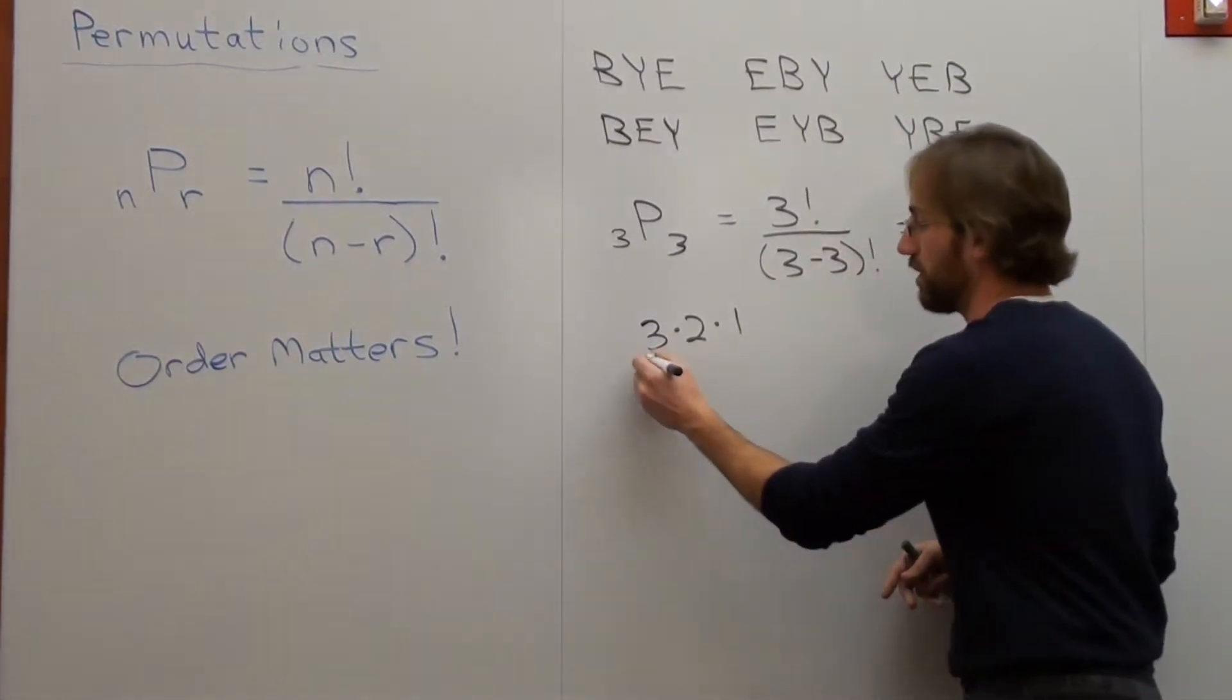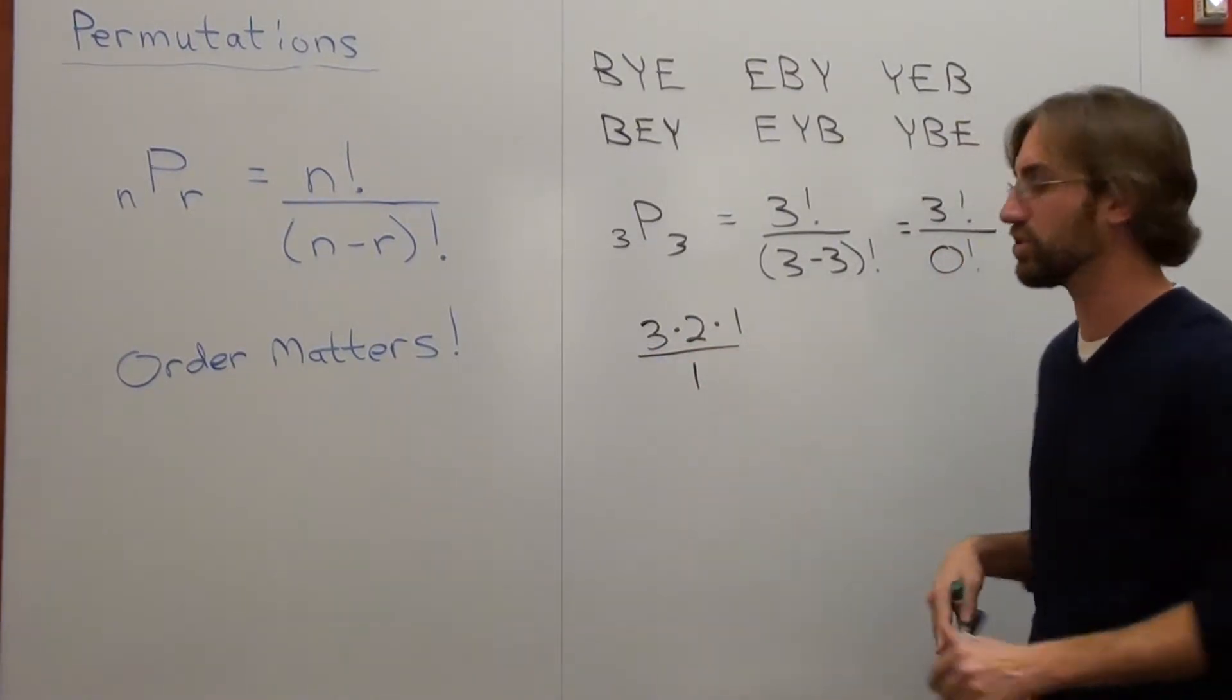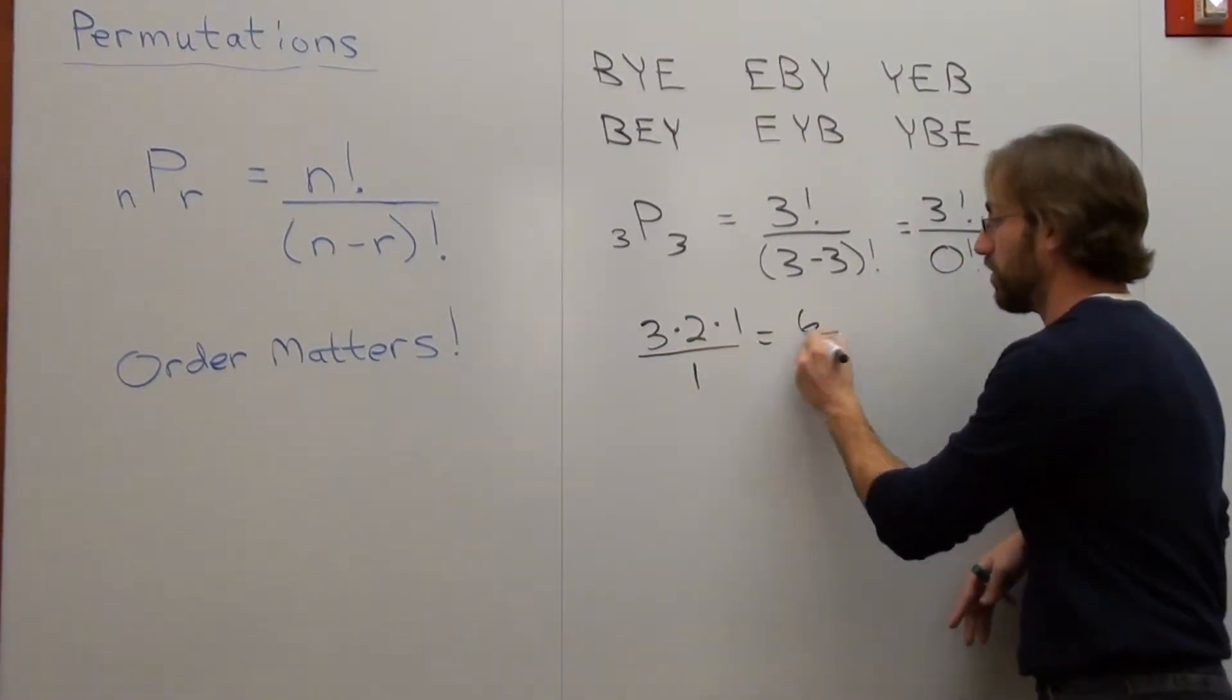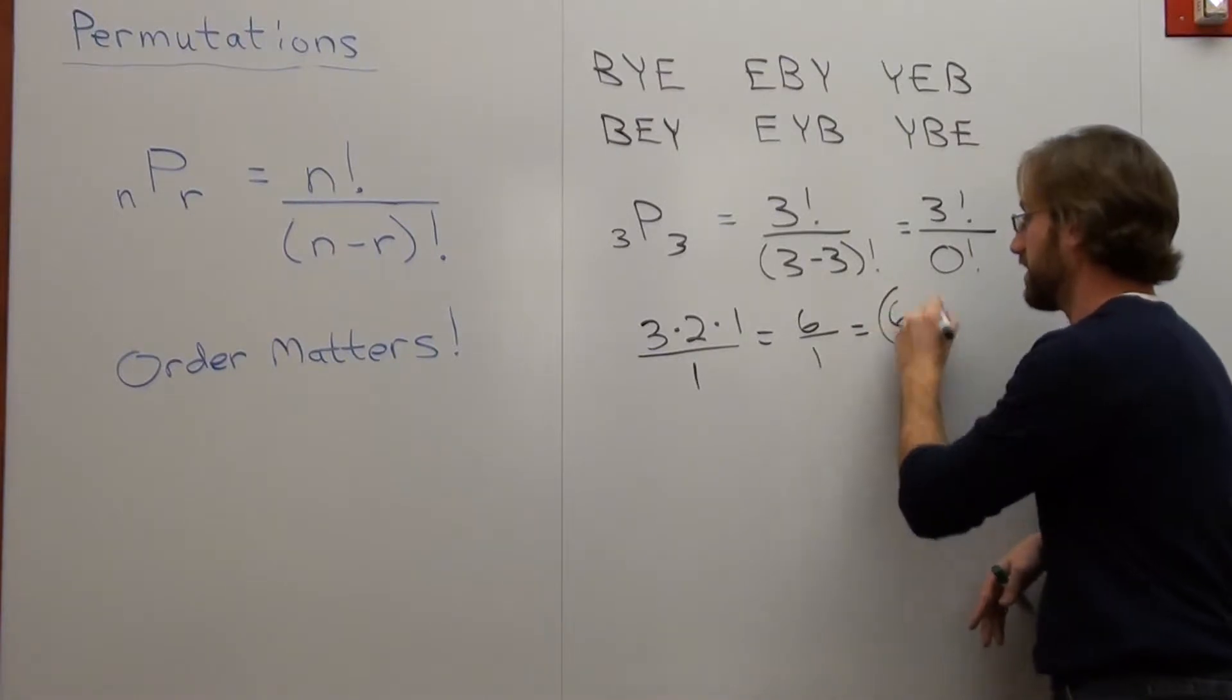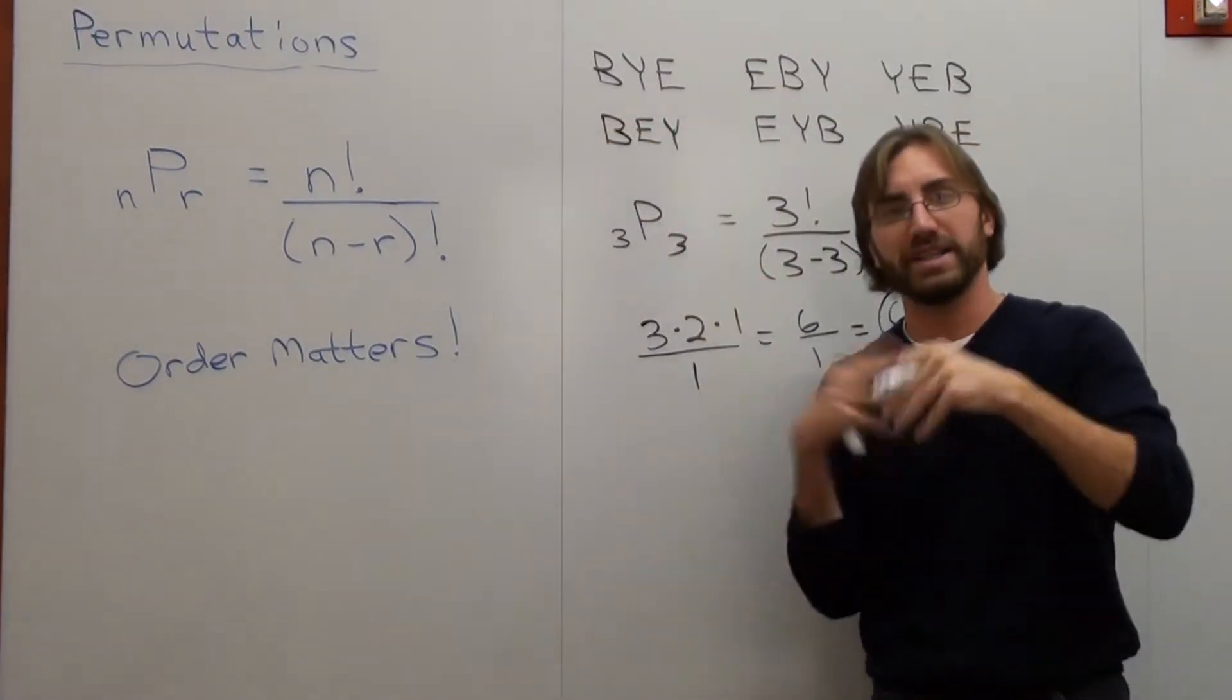So it's three times two times one over one. Zero factorial by definition is one. That's six over one. That's six. You can rewrite the word BYE six different times.